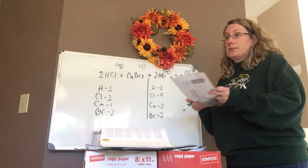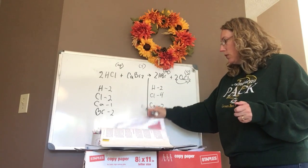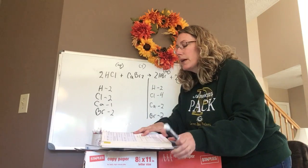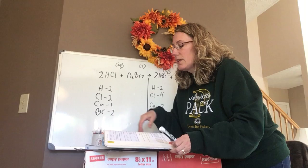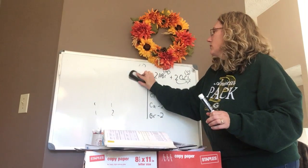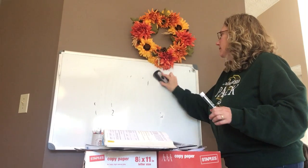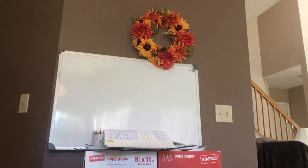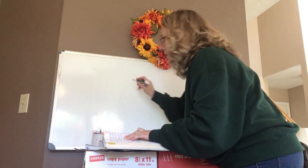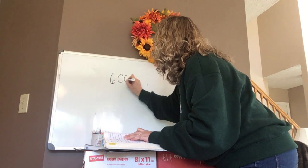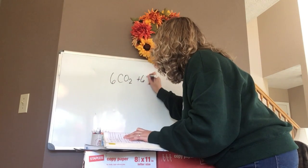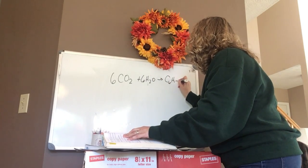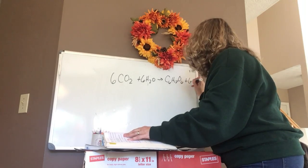So we're going to learn today how to balance an equation. Six CO2 — that's six carbon dioxide — plus six H2O, six waters, turns into C6H12O6 plus some oxygen.